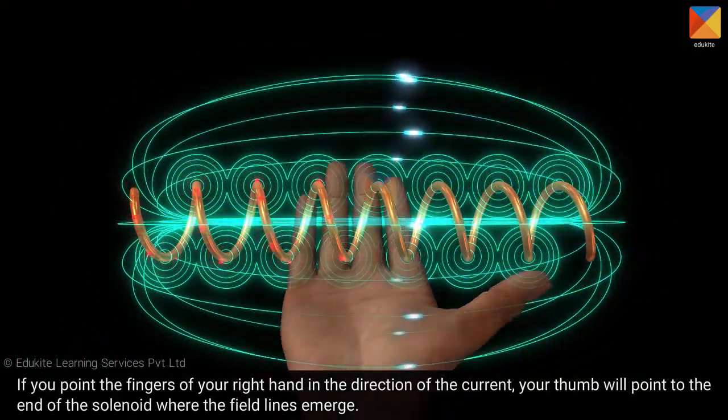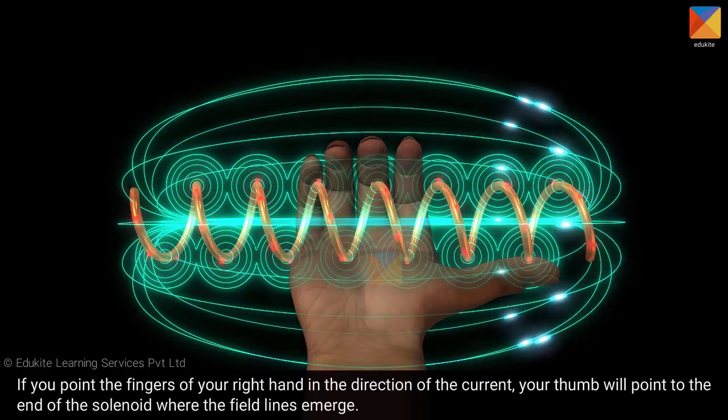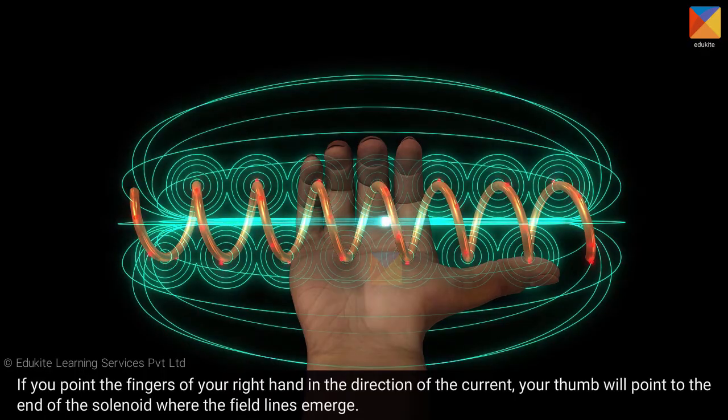If you point the fingers of your right hand in the direction of the current, your thumb will point to the end of the solenoid where the field lines emerge.